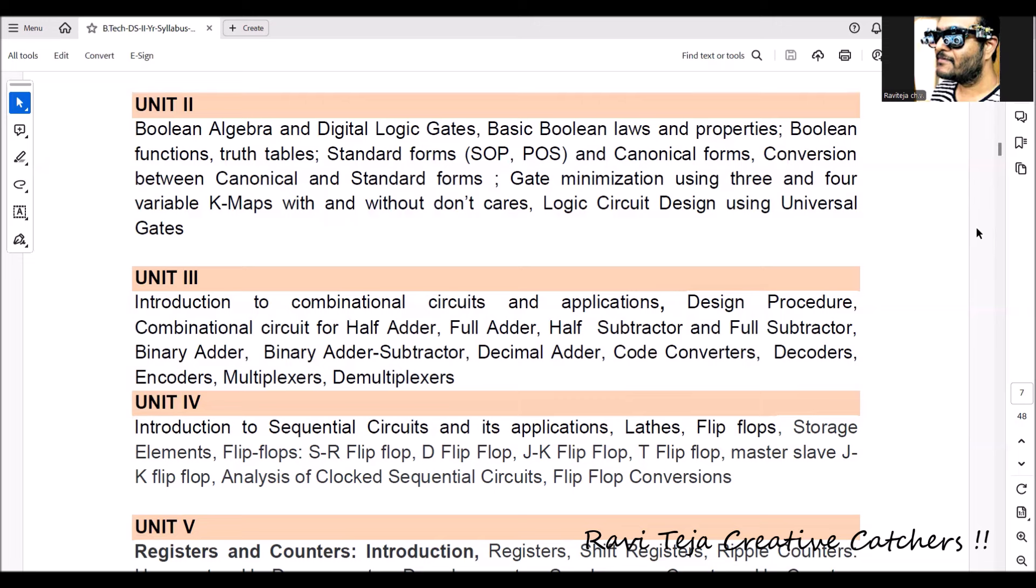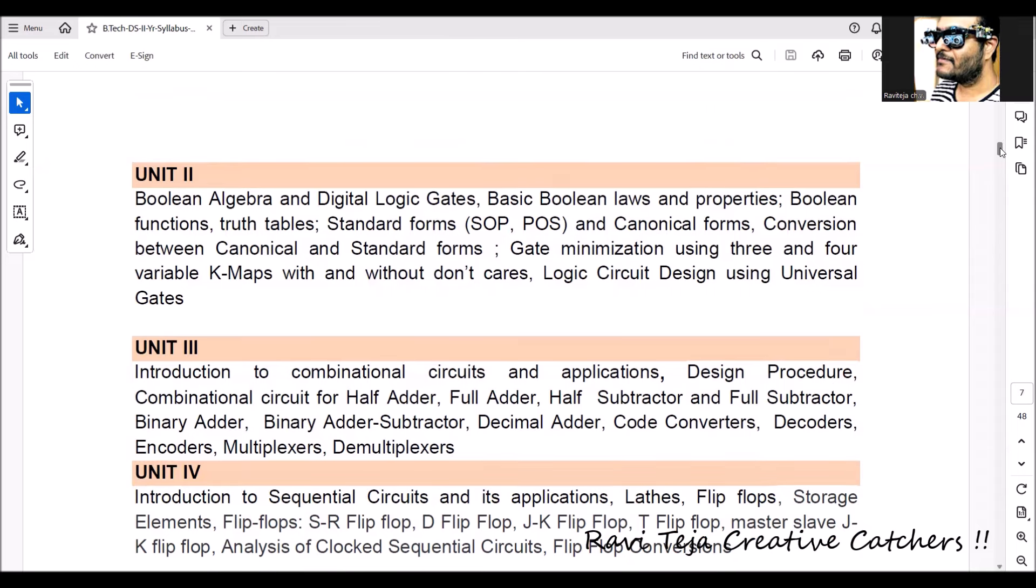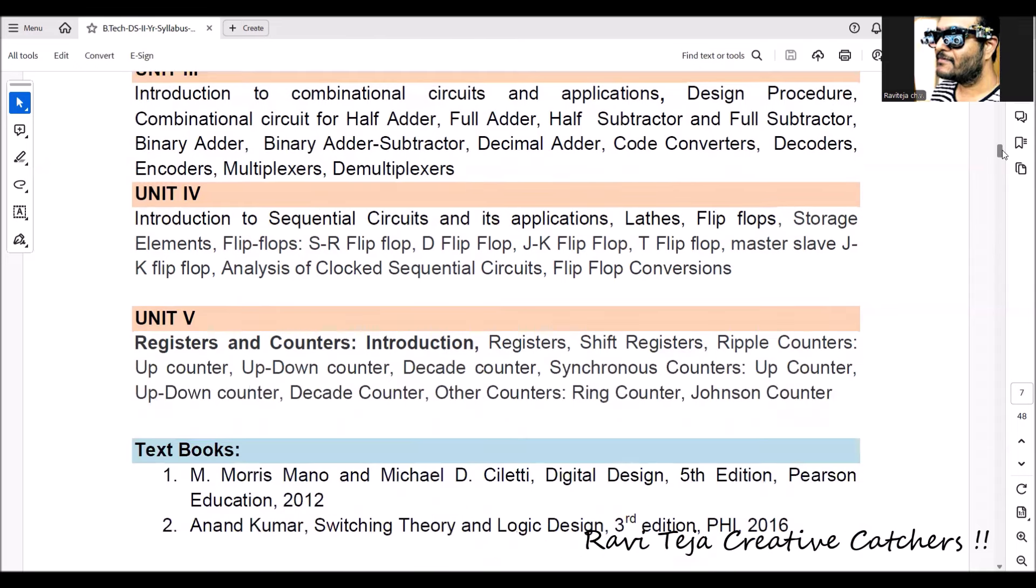Coming to the last one, Unit 5, this unit comprises of both registers as well as counters. In registers, we are going to learn about shift registers. In counters, we are going to see up-down counters, decade counters, synchronous counters. We can also see ring counter, Johnson counters, and all those things.